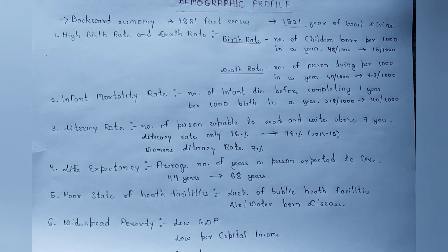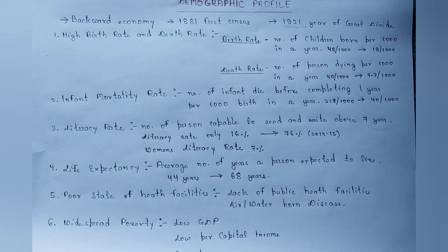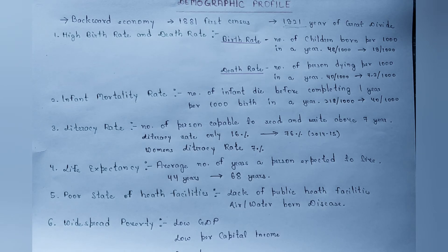Next जो है वो है infant mortality rate — यह बहुत ही important definition है और one marks question में बहुत casually पूछा जाता है। इसको हम define कर सकते हैं: number of infants who die before completing one year of age per thousand births in a year। जितने सारे children one year complete होने से पहले ही death कर जाते हैं उन्हें हम infant mortality rate कहते हैं। उस वक्त जो हमारा infant mortality rate था वो 218 था और अभी हमारा infant mortality rate 40 है।